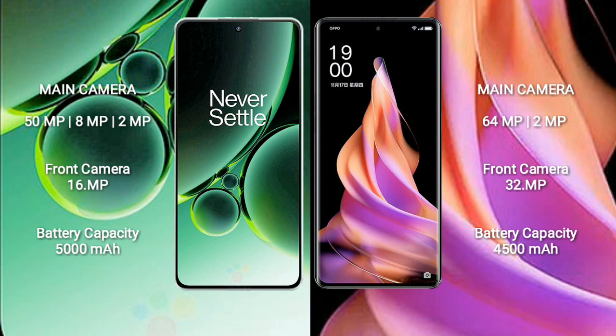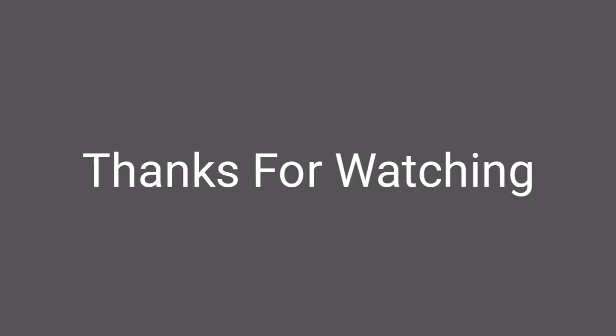OnePlus Nord 3 has a 5000mAh battery with 80W fast charging support. OPPO Reno 9 has a 4500mAh battery with 67W fast charging support.